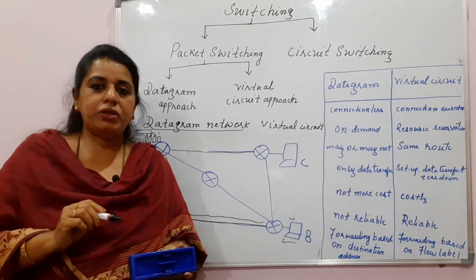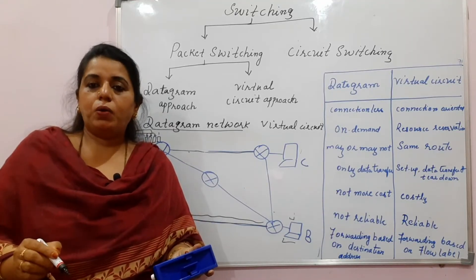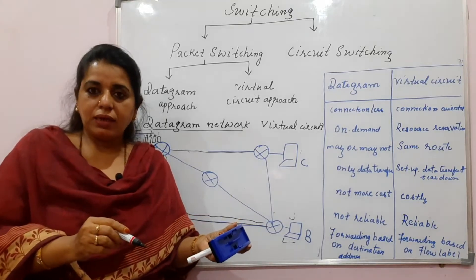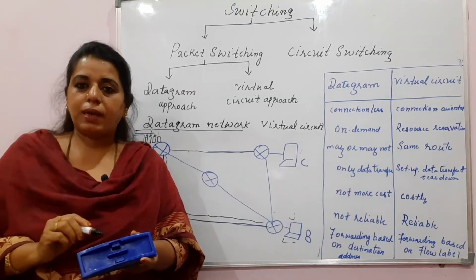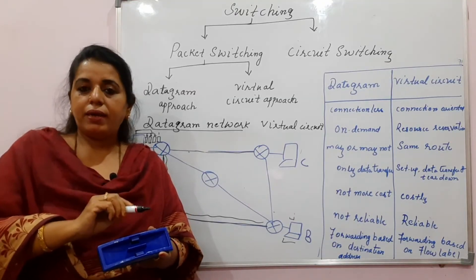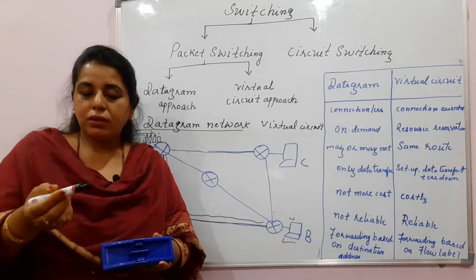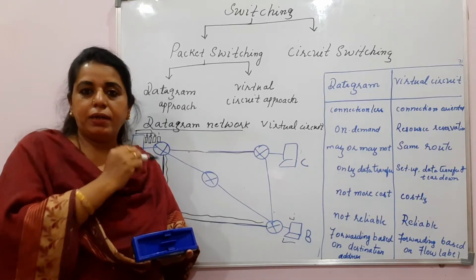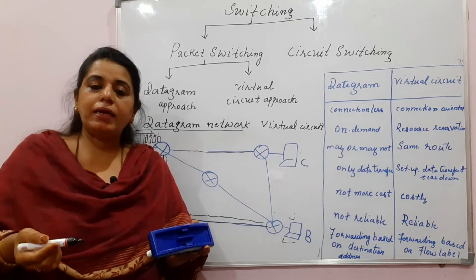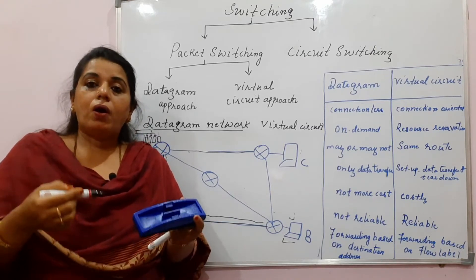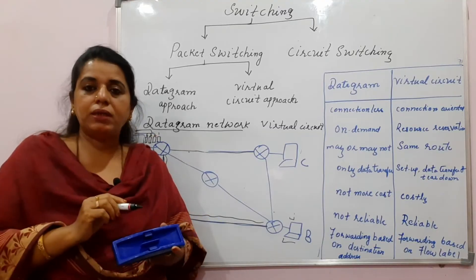As mentioned in the previous lecture, every router maintains a forwarding table with two columns: the destination address in the first column and the respective port numbers in the second column. This is how the router forwards the packet — that technique is adopted in the datagram approach and there is no pre-established path. On demand, the route is selected and the packet traverses towards the receiver side.